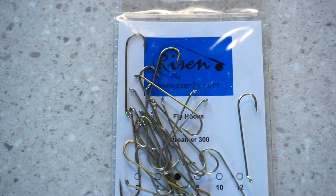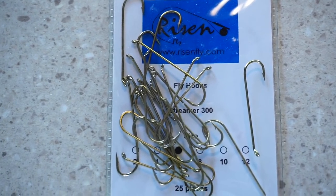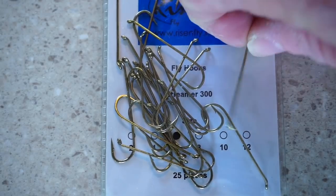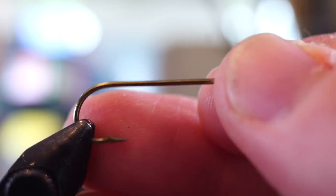I like using a 3-4x long streamer hook for this fly, like this Risen number 300. Whatever hook you're using, secure it into your vise.